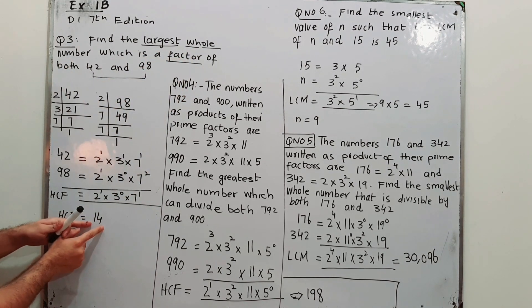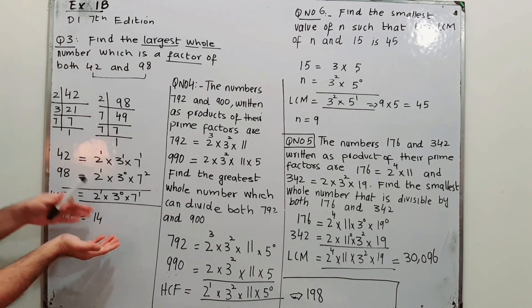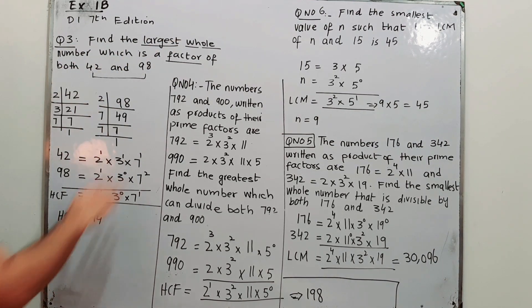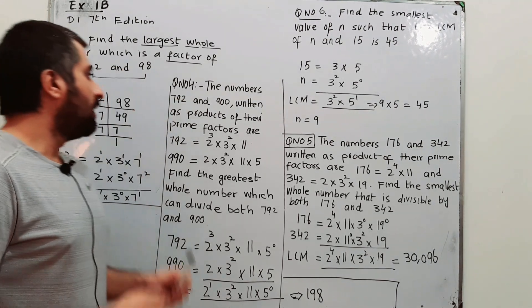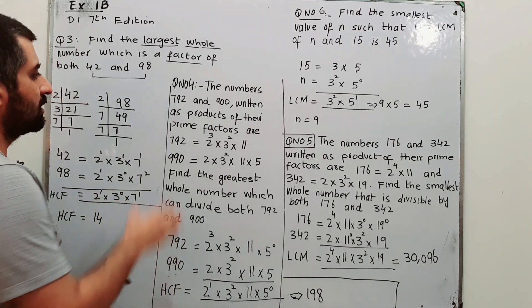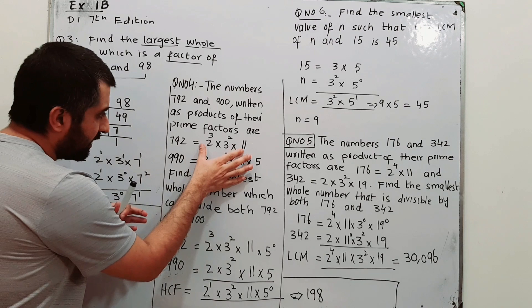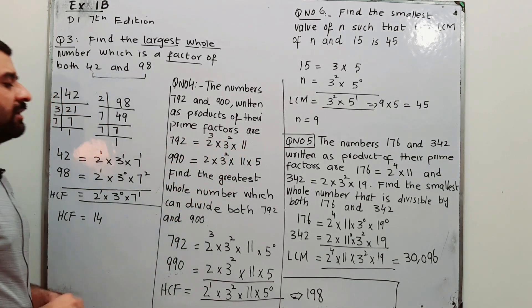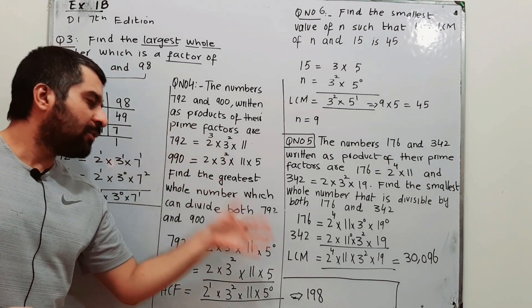42 divided by 14 is possible and 98 divided by 14 is possible, so 14 is indeed the largest whole number factor. Question number 4: the numbers 792 and 990 are written as a product of their prime factors in index notation.